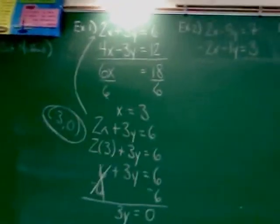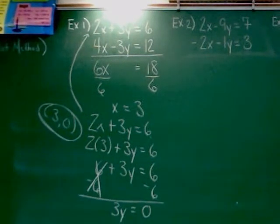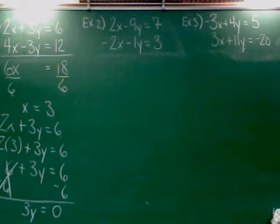Let's try it again in example two. Two X minus nine Y equals seven. Negative two X minus one Y equals three. Step one is done because I've got all the X's and the Y's and the lonesome numbers lined up.